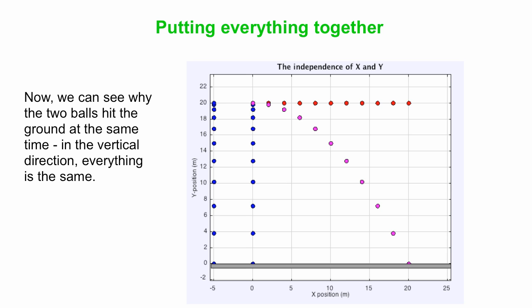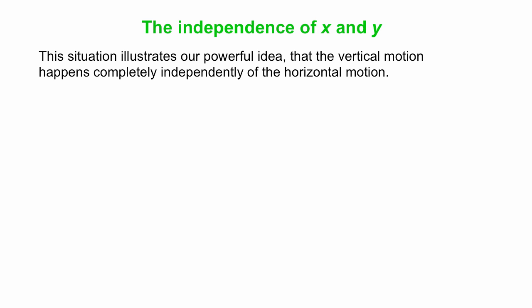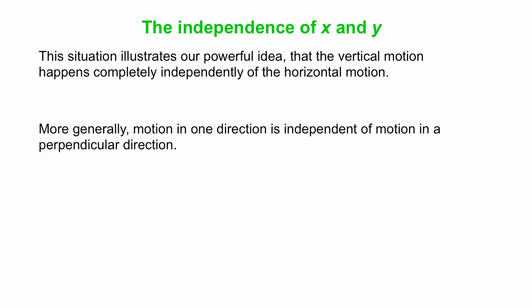Sorry, everything is the same vertically. A race between two things in which everything is the same vertically. And what happens vertically determines the time to hit the ground. So the two balls have to hit at exactly the same time here. The fact that one has an extra horizontal piece to its motion doesn't matter one bit. Okay, so that situation illustrates this quite powerful idea that the vertical motion happens completely independently of the horizontal motion. And, more generally,